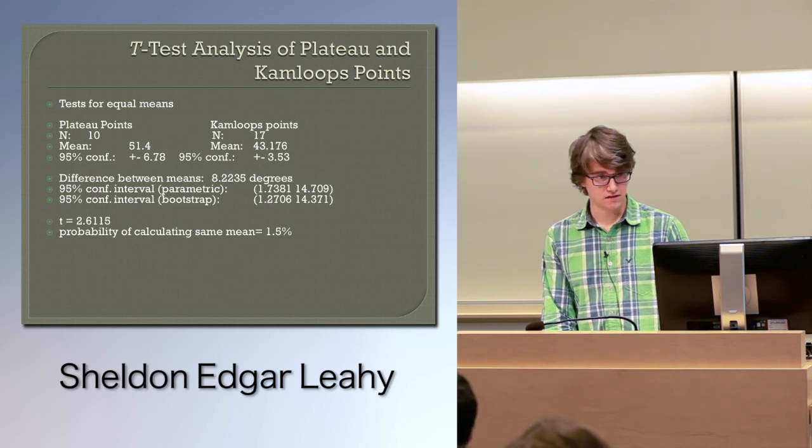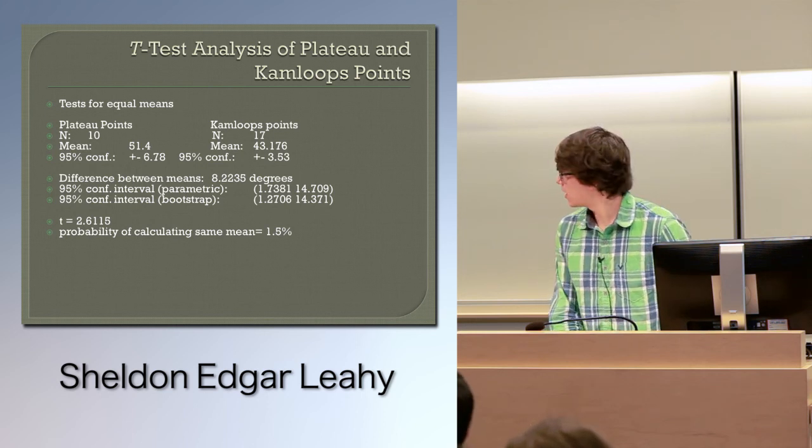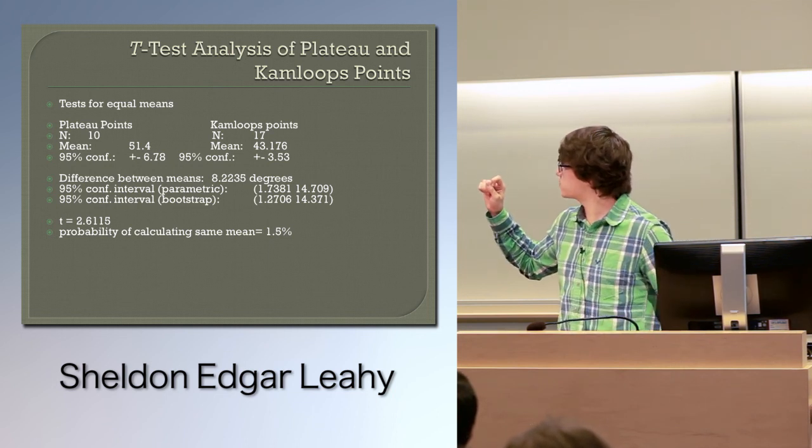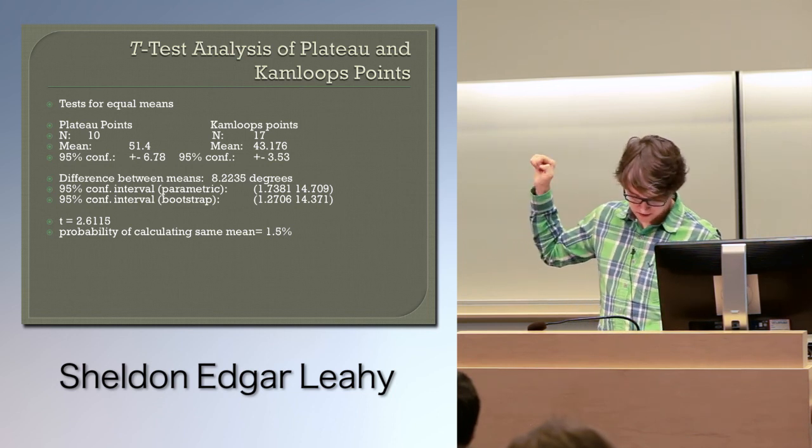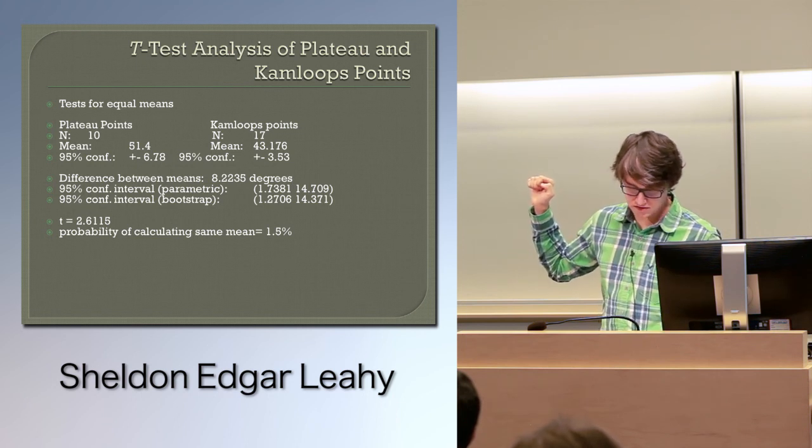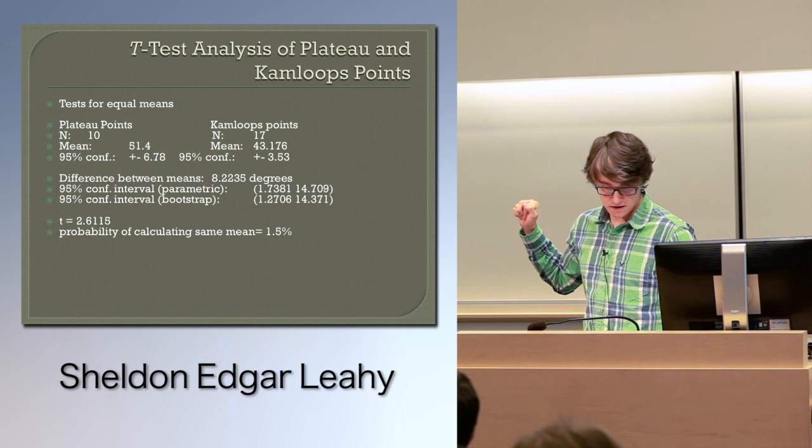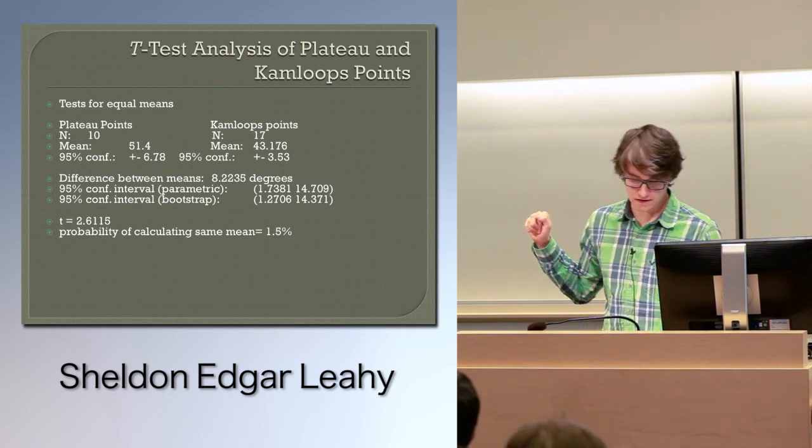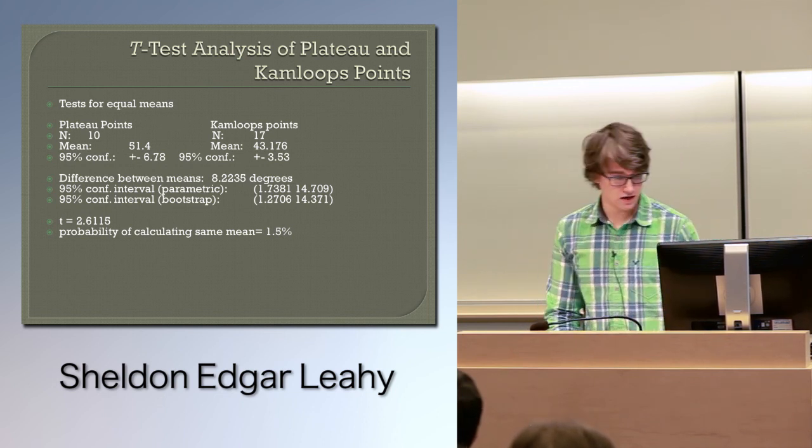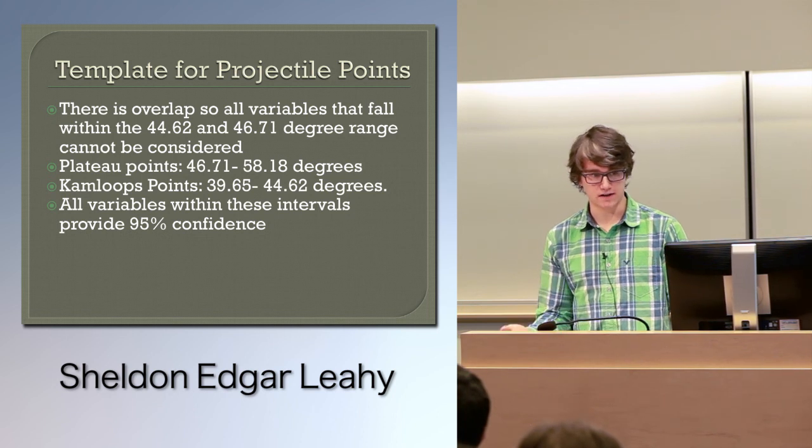I ran some t-test analysis on the two numbers, and I got a range for the plateau points of plus minus 6.78, and for the Kamloops points of 3.53. Anything between 44.62 to 58.18 degrees for the plateau points was 95% confident, and anything between 39.65 to 46.71 degrees for Kamloops point was 95% confident. But there was overlap, so I cannot count anything between 44.62 and 46.71 degrees, because they could fall within plateau or Kamloops points.